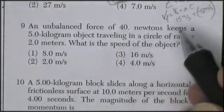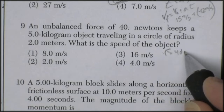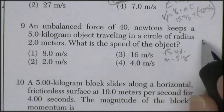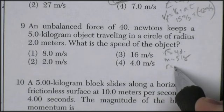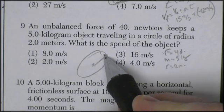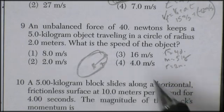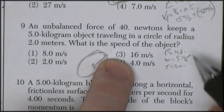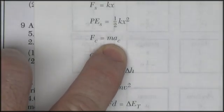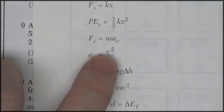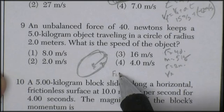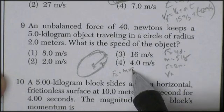Question nine. An unbalanced force of 40 newtons keeps a five kilogram object traveling in a radius of two meters. So an object going in a circle, obviously being held by some string. What's the speed of the object? So the velocity. Force centripetal is equal to MA centripetal. And A centripetal is V squared over R. So I'm going to write the equation for centripetal equals MV squared over R.